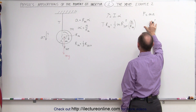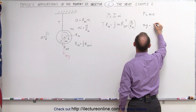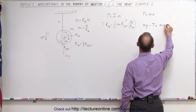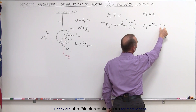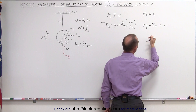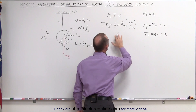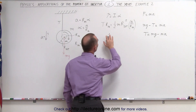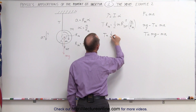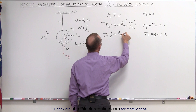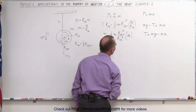Plugging alpha = a/r_inner into our equation, F equals ma gives us: mg minus tension equals mass times acceleration. Solving for tension, we get tension equals mg minus ma. From the torque equation, we can write that tension equals one-half the mass times r_outer squared divided by r_inner squared times the acceleration.